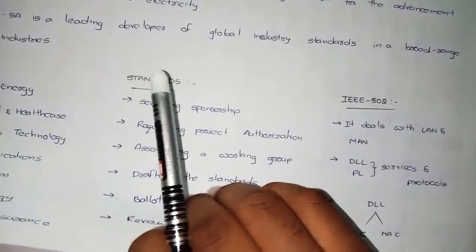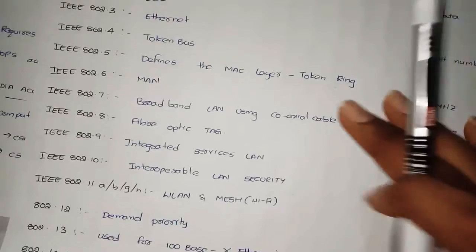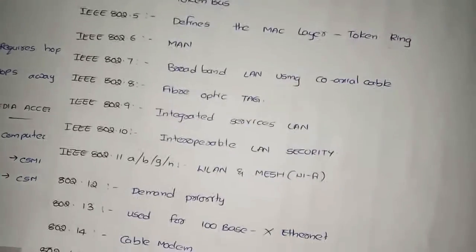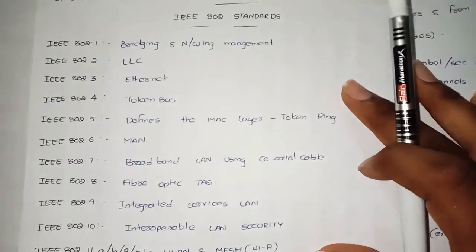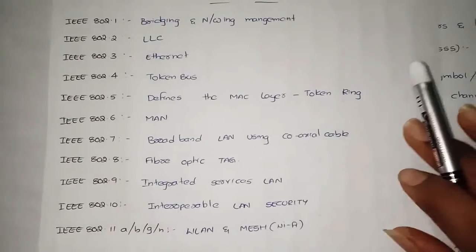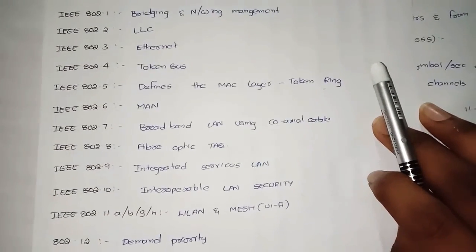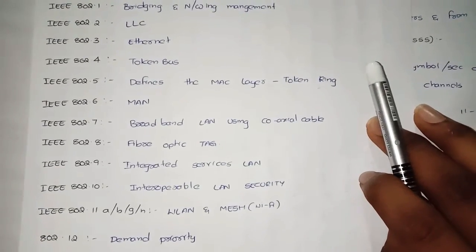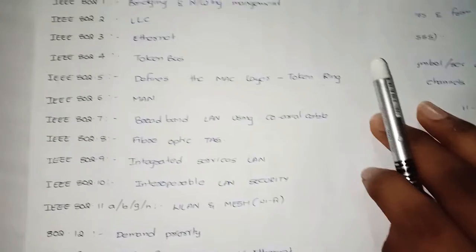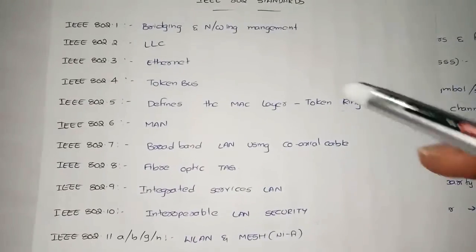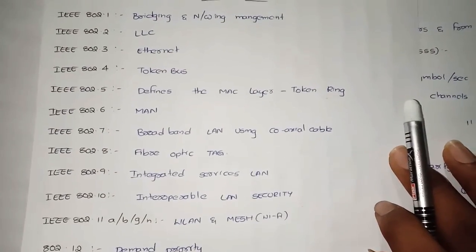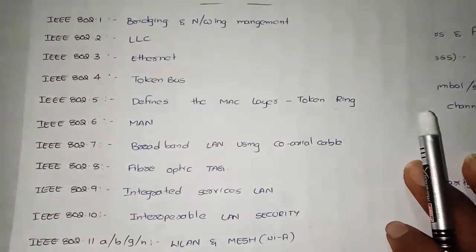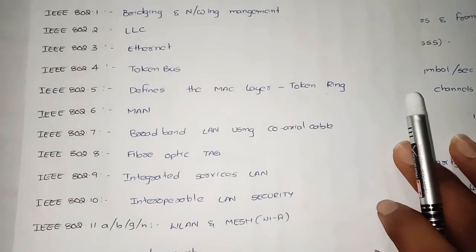There are 16 IEEE 802 standards that have been developed, and we need to remember all of them for government or core examinations. Each standard has a unique address. The first one is IEEE 802.1, which deals with bridging and network management.